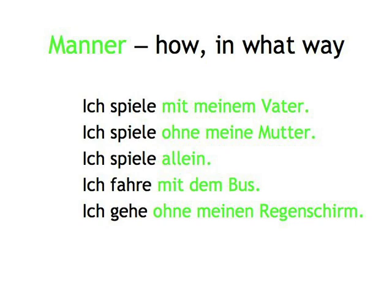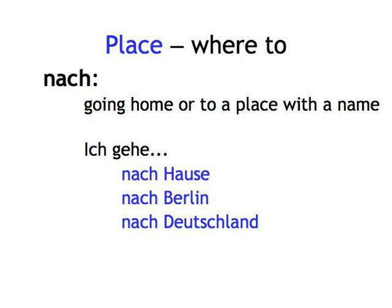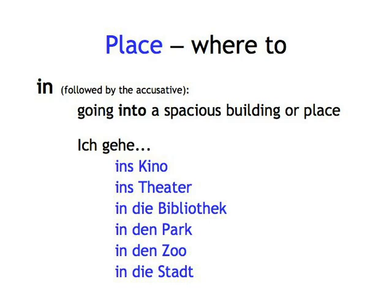Talking about places — where to. If you're talking about going home or to a place with a name, use 'nach': nach Hause, nach Berlin, nach Deutschland. If you're going into a spacious building or place, use 'in' followed by the accusative: ich gehe ins Kino, ins Theater, in die Bibliothek, in den Park, in den Zoo, in die Stadt.